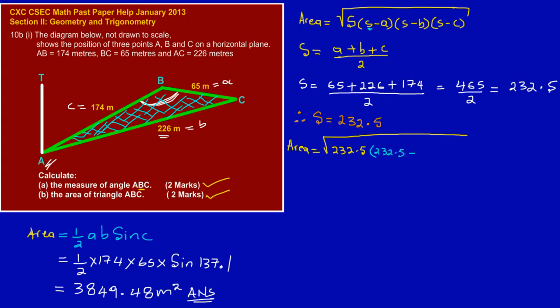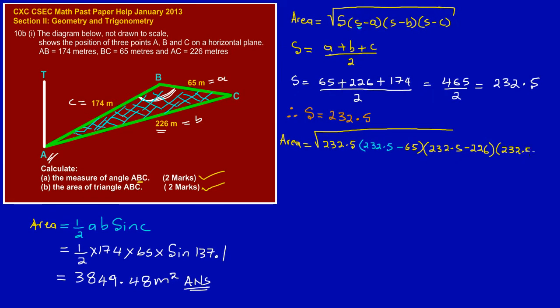232.5 minus a, and if you notice from the diagram a is 65, so we're subtracting 65, close bracket, open bracket again. In the second bracket I have s, so I'm going to have to put back that value, which is 232.5 minus b. Now if we should look at the diagram, b is 226, so we're subtracting 226, close bracket, open bracket again. In the final bracket we have s, which is 232.5 minus c, and in this case c is 174, close bracket.